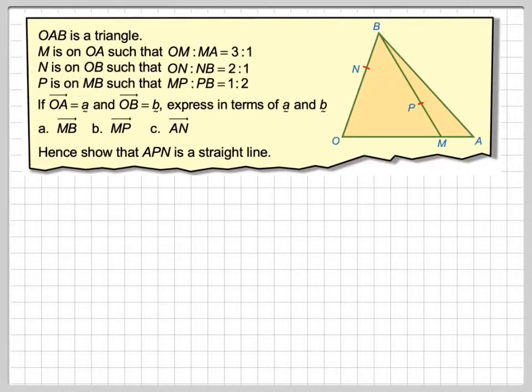OAB is a triangle. M is on OA such that the ratio OM to MA is 3 to 1.